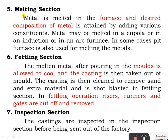The next section is the melting section, where the furnace is used and the desired composition of metal is attained by adding various constituents. Metal may be melted in a cupola, or in an induction furnace, or in an arc furnace. In the fettling section, the molten metal after pouring into the molds is allowed to cool. The casting is then taken out of the mold, cleaned to remove sand and extra material, and shot blasted in the fettling section.